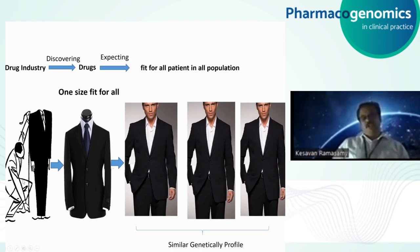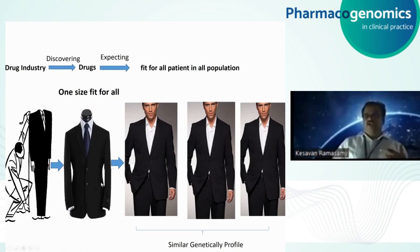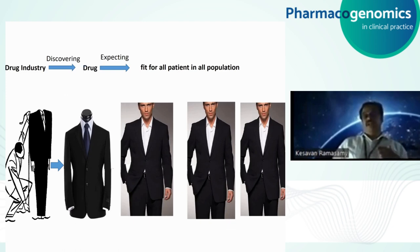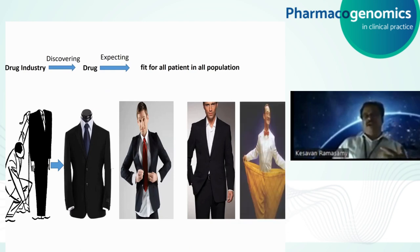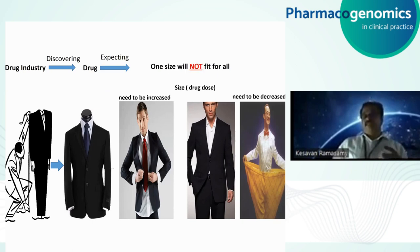Similarly, in these conventional clinical trials, we assume that the genetic profile of all participants is similar. But in reality, we are all different genetically — some are oversize, some are undersize. So one size will not fit all. The size needs to be altered according to the person. We need to tailor according to individuals. Similarly, drug doses also need to be increased or decreased for some individuals.